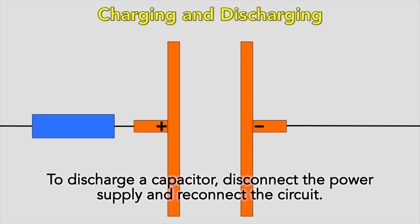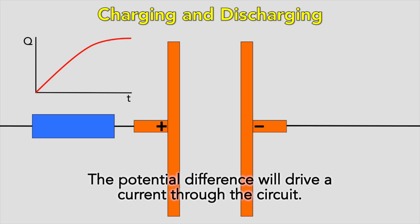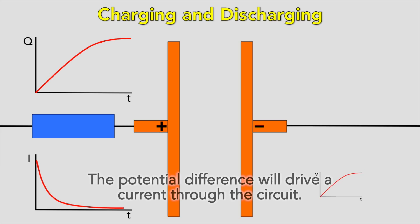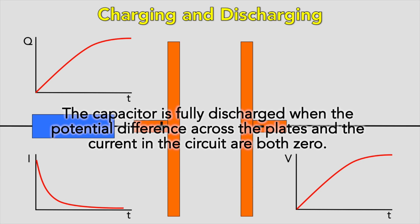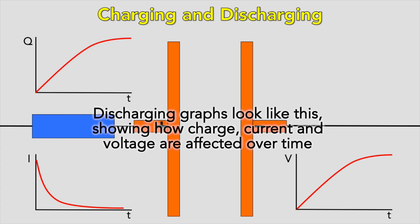To discharge a capacitor, disconnect the power supply and reconnect to the circuit. The potential difference will then drive a current through the circuit. The capacitor is fully discharged when the potential difference across the plates and the current in the circuit are both zero. Discharging graphs show how charge, current, and voltage are affected over time.